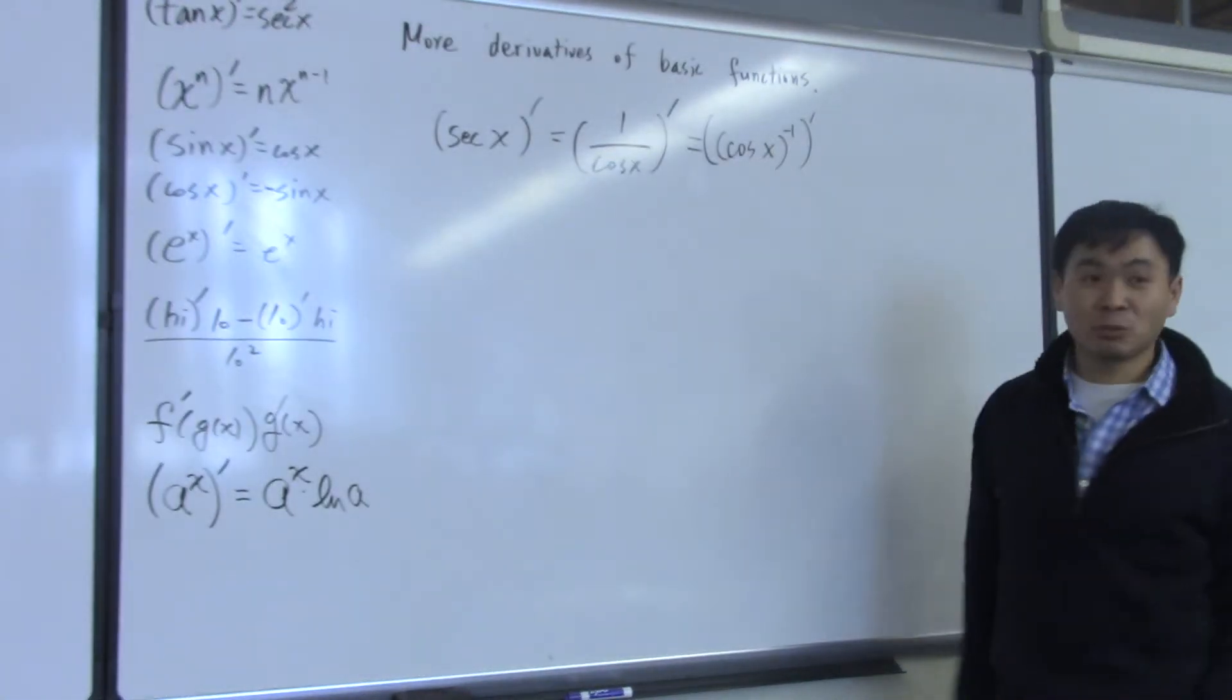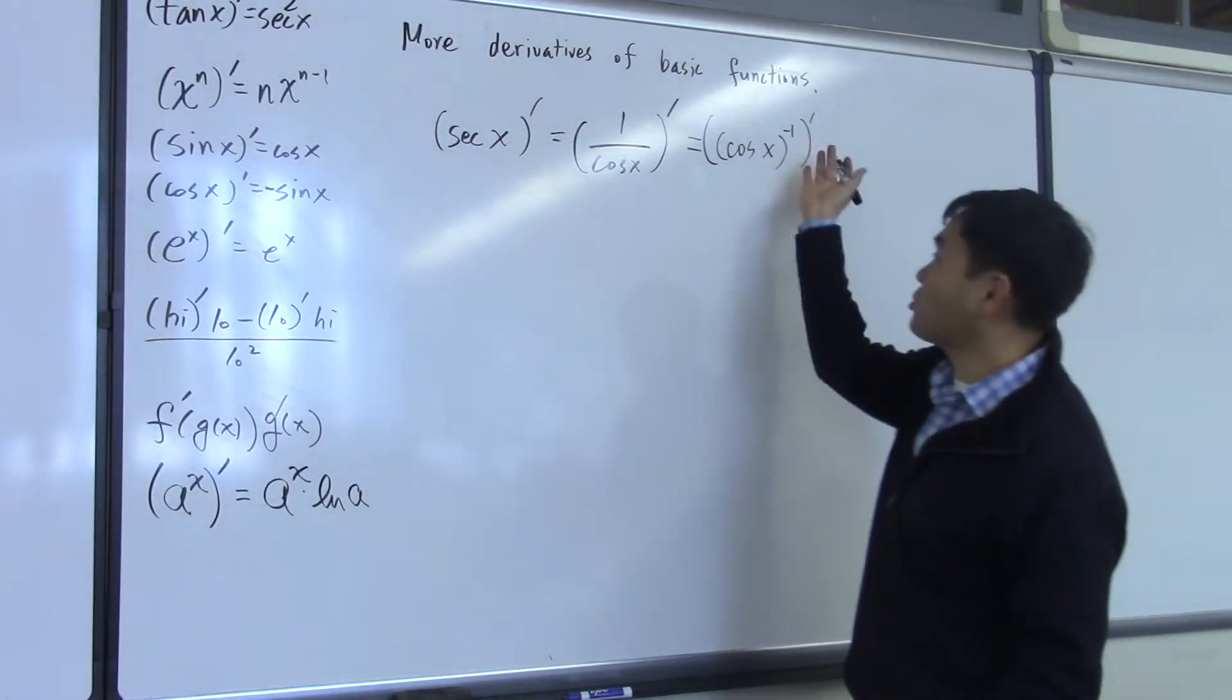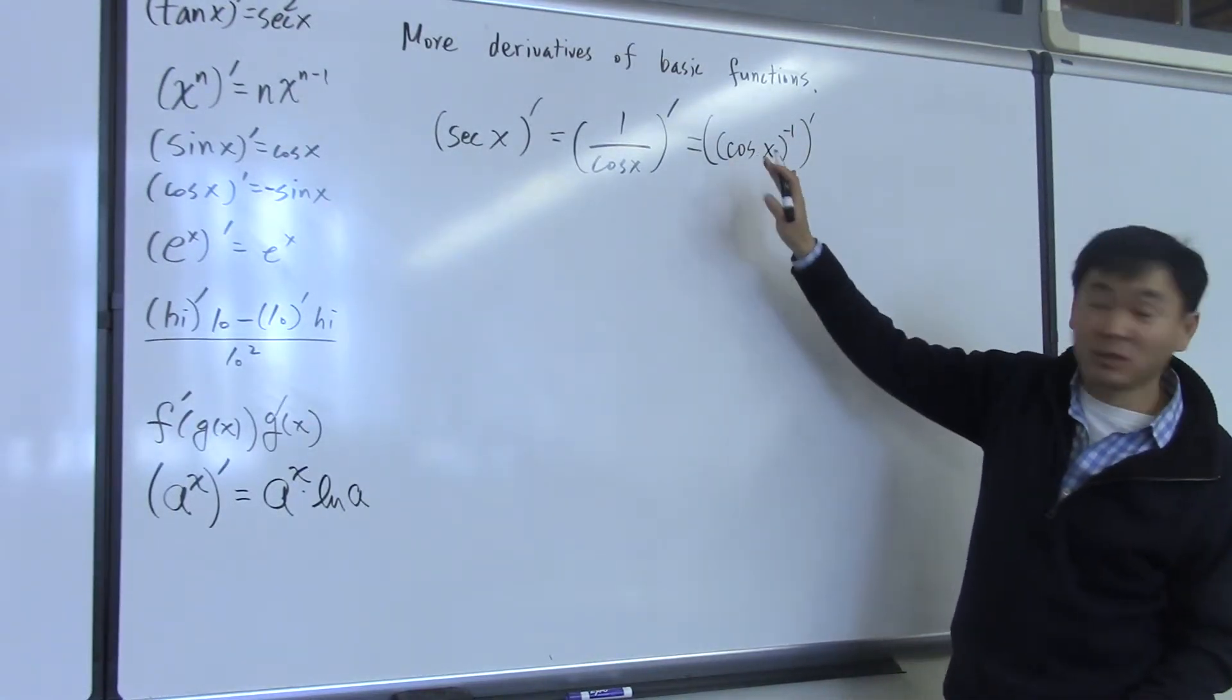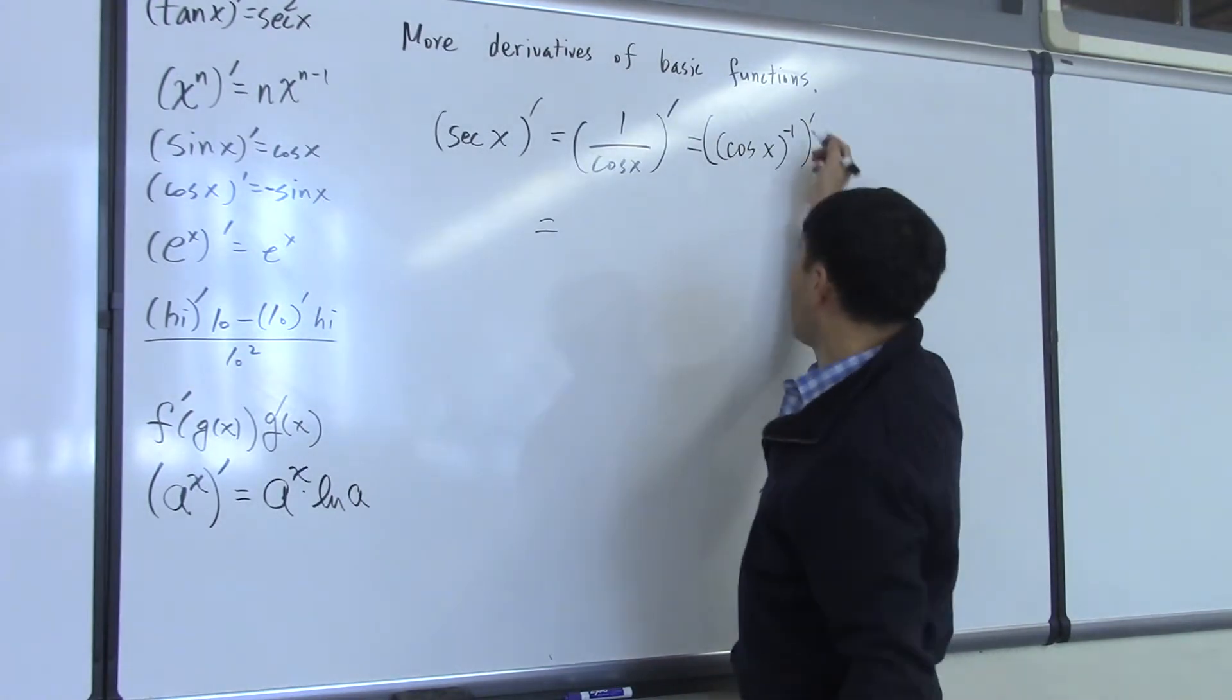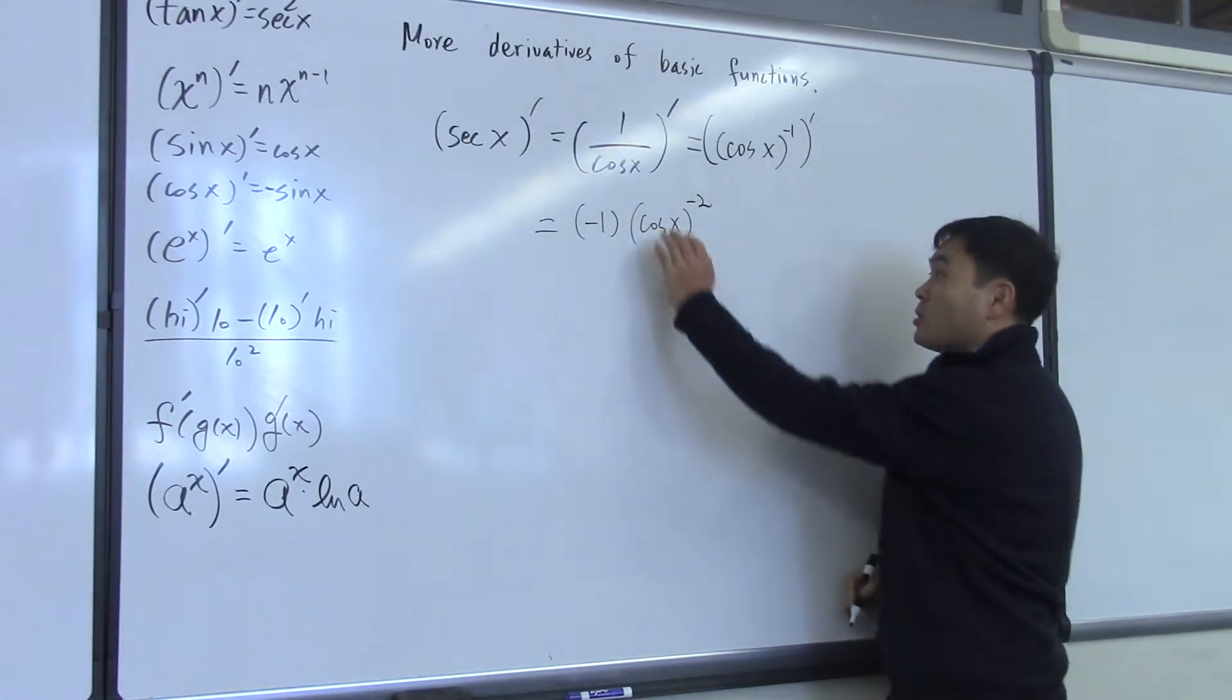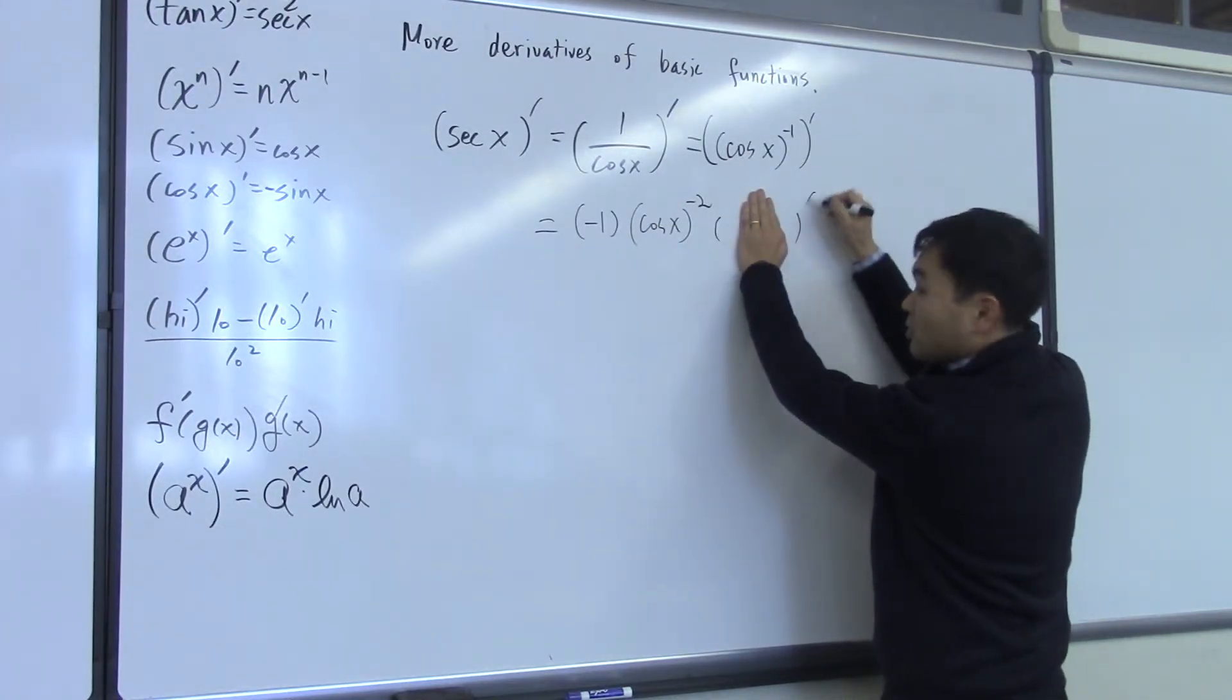We can do this, right? One over anything is that function to negative one power. Now, if I put it like this, what rule must I use? Chain rule. Chain rule because now cosine x is nested inside the negative one power function. So, you have two choices. You can use the quotient rule if you don't want to change the format. If you change the format into a nested function, then you have to use the chain rule. Okay? Okay, the chain rule says, if I cover this thinking of this as like x, what's the derivative of x to the negative one? Negative one hops in front. And you have to subtract one off the exponent, so that's negative two, right? And then what do you do? So, it's like x to the negative one differentiates to negative one times x to the negative two. Then what does the chain rule say? Pull the inside function out and differentiate. That's what the chain rule says.